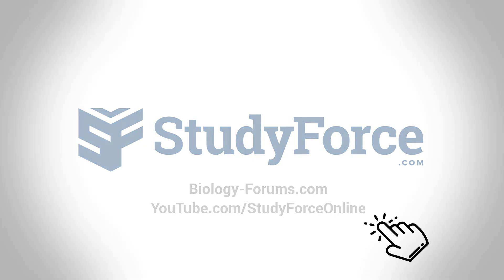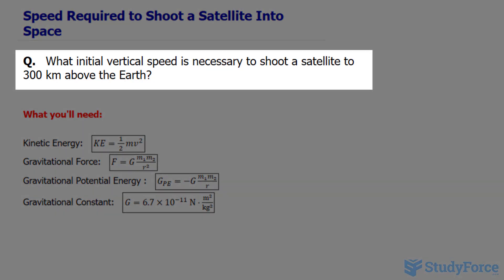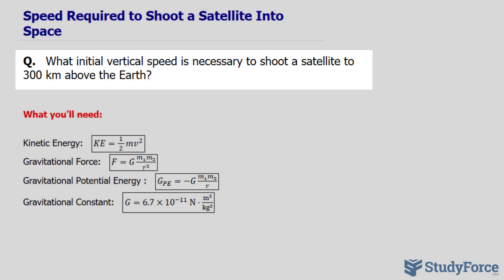In this lesson, I'll show you how to find the speed required to shoot a satellite into space. The question reads: what initial vertical speed is necessary to shoot a satellite to 300 kilometers above the Earth?